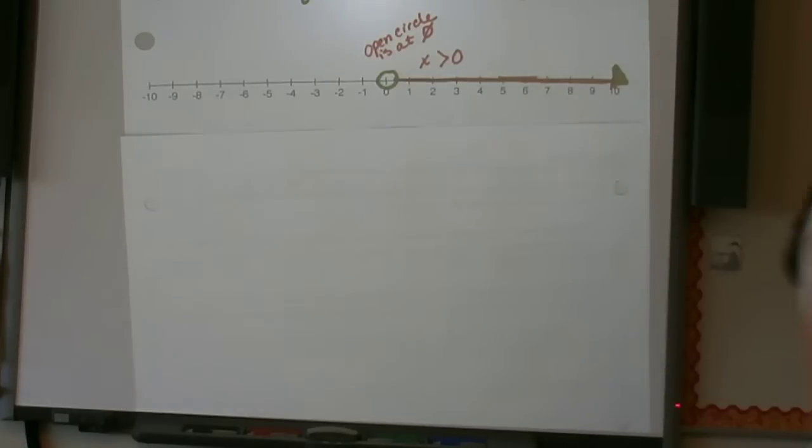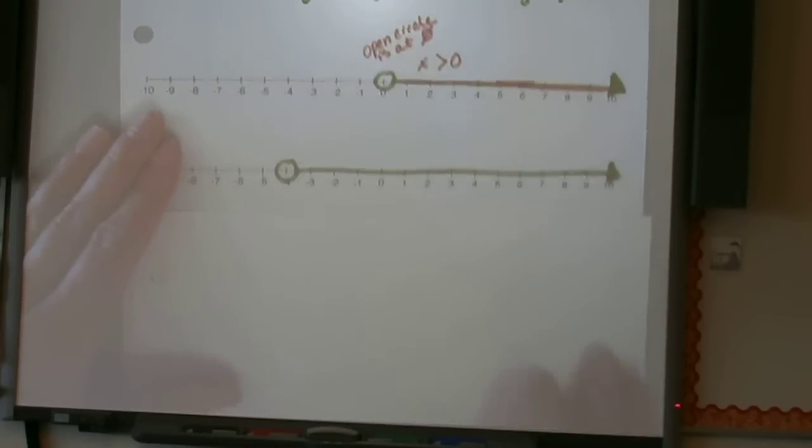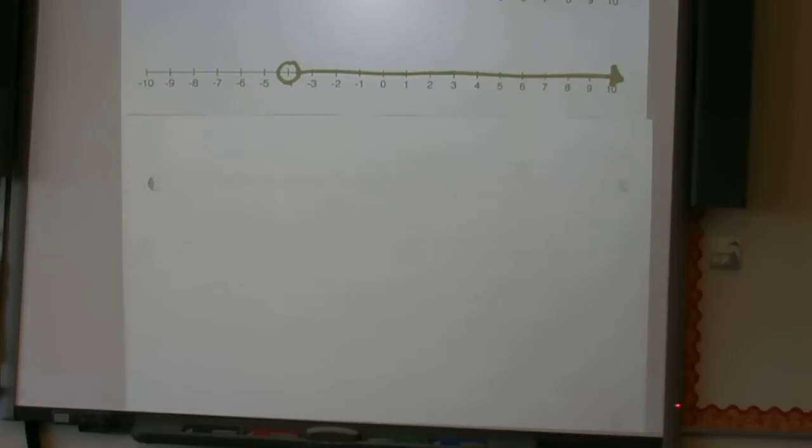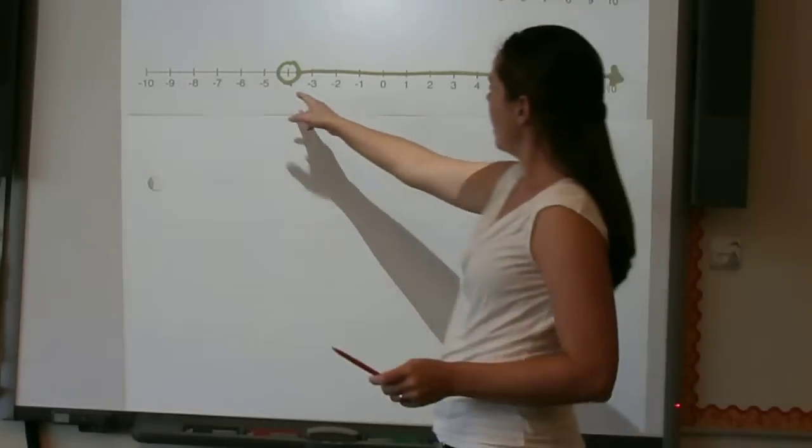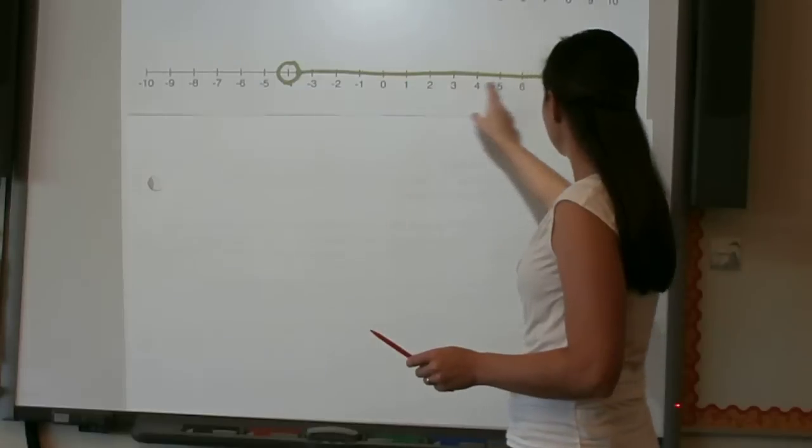Let's look at a second example. Now we have another open circle. This time the open circle is at negative four. And then our number line is colored all the way to the right.